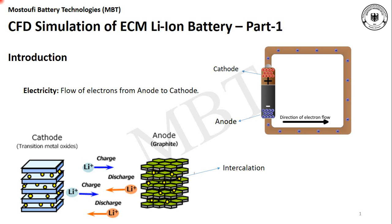In a lithium-ion battery, the anode is composed of lithium and graphite. The lithium is layered in between the graphite structure, and this is called intercalation. On the other hand, the cathode is made of metal oxides.